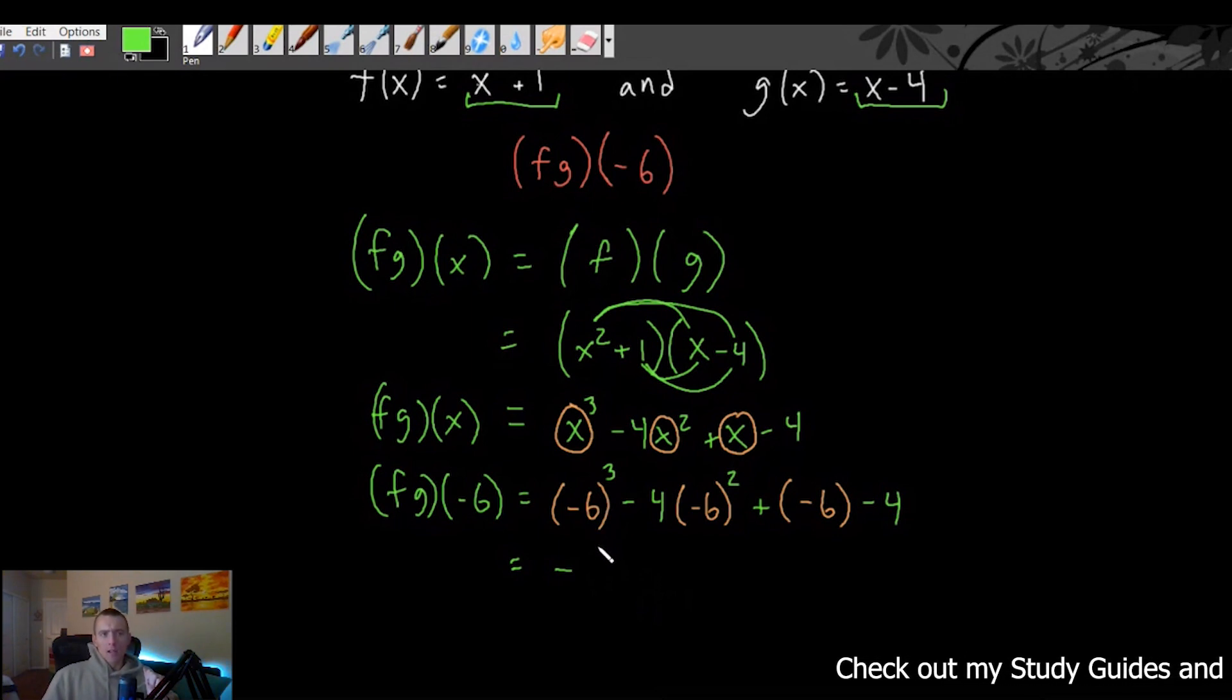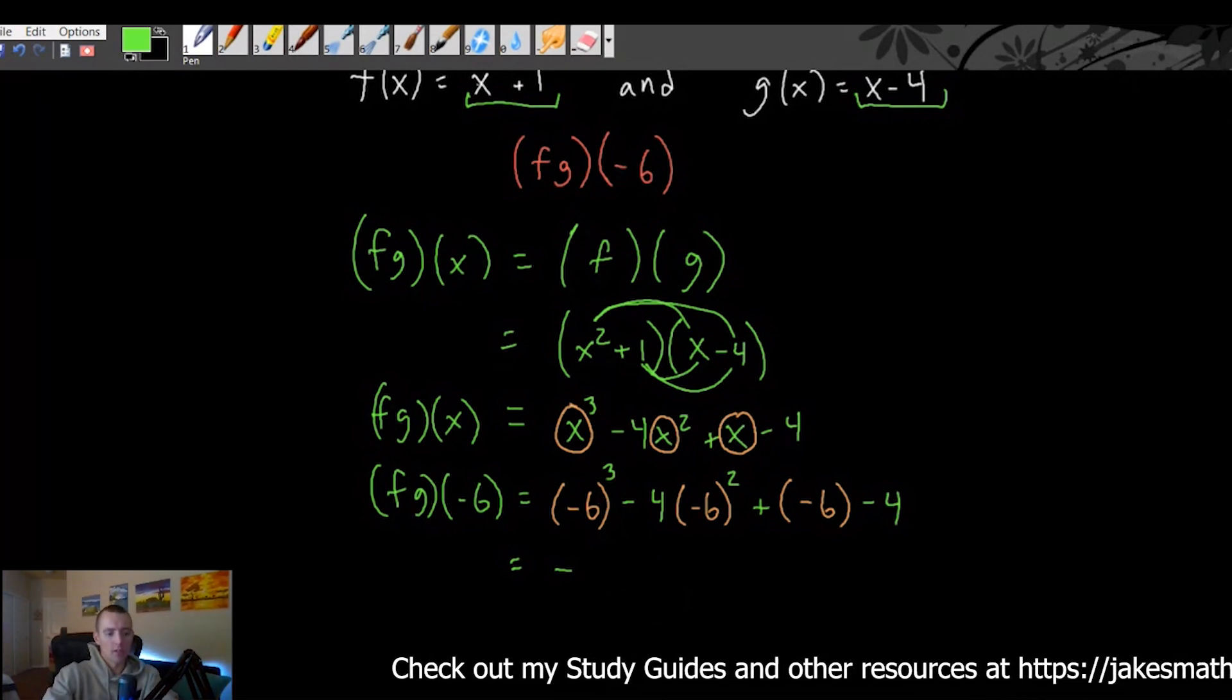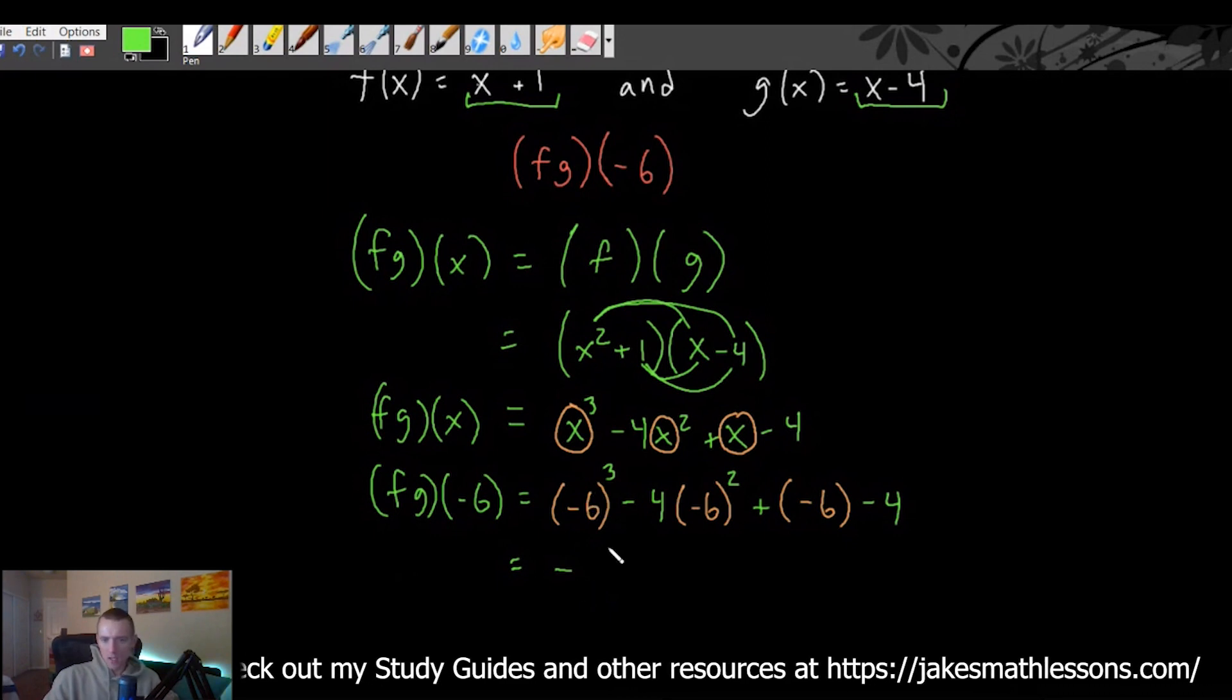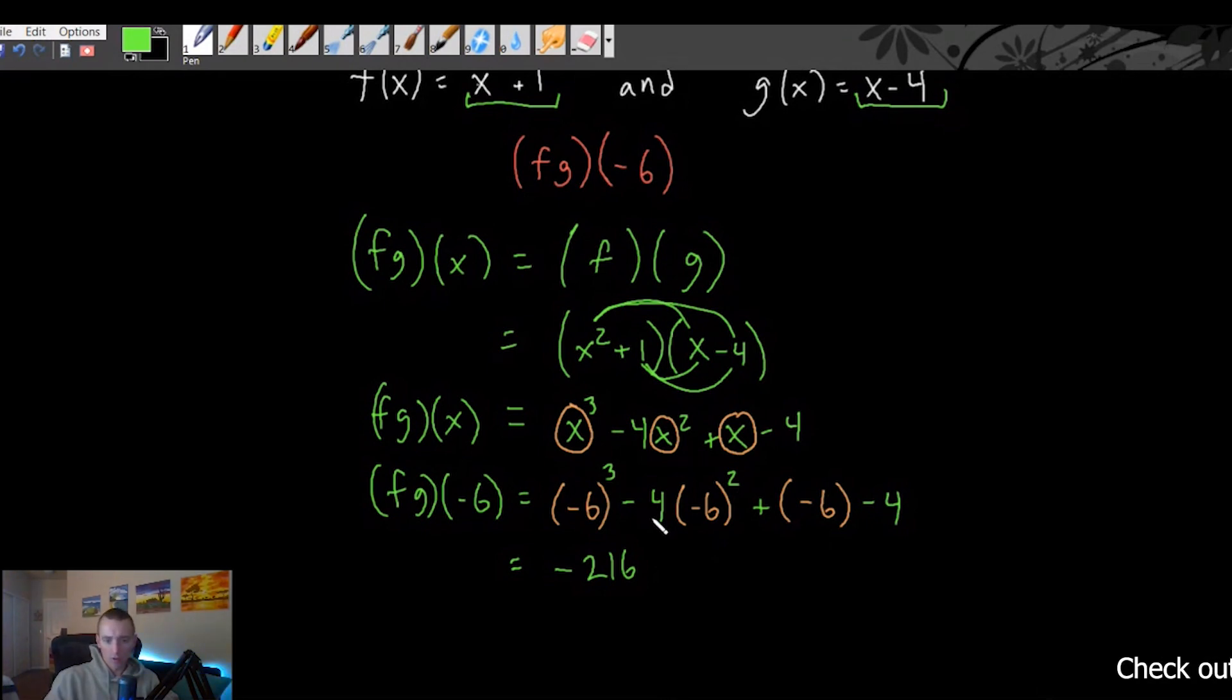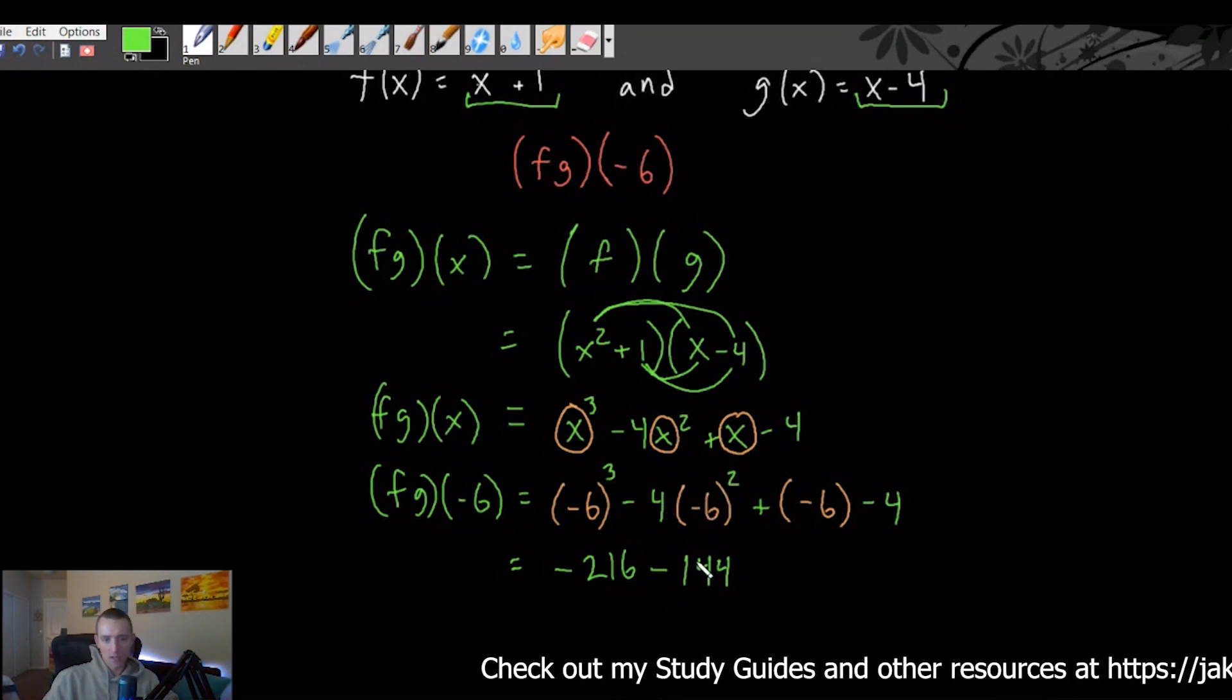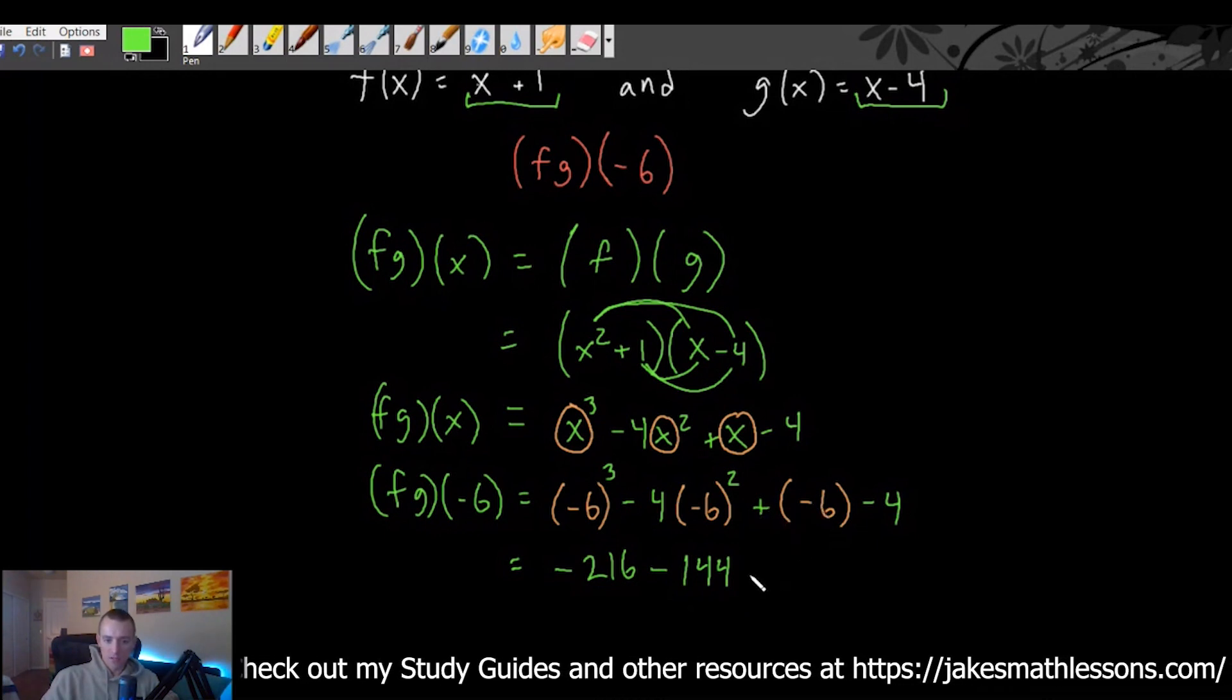But anyway, negative 6 cubed. Let me calculate that real quick. I probably should have done this ahead of time here. So negative 6 cubed is going to end up being negative 216. And then negative 6 squared is the same as saying negative 6 times negative 6, which is positive 36. And then positive 36 times negative 4 is going to be negative 144. So the negative 6 squared is a positive times this negative 4 gives us a negative 144 plus negative 6 is minus 6 and then minus 4.